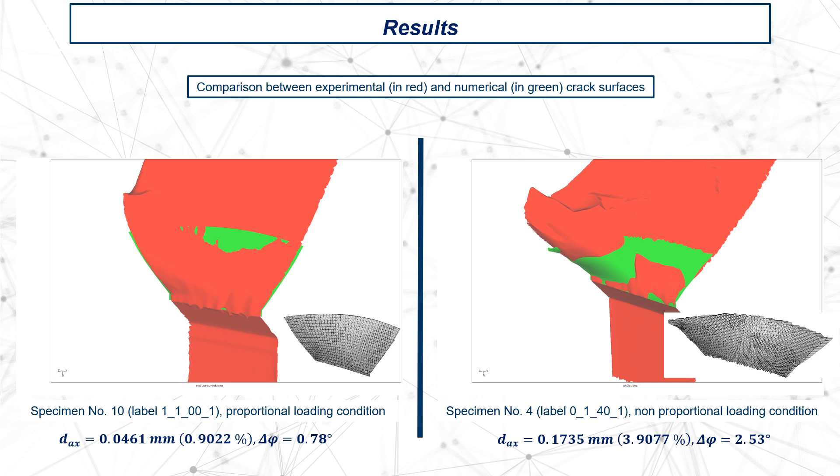In this slide, on the left-hand side, there is a comparison between experimental in red and numerical in green crack surfaces for a proportional loading condition, both R_axial and R_torsional equal minus 1, and zero phase shift between the loads. It is worth to note how the discrepancy, both in terms of axial deviation and deflection angle, is higher in the case of non-proportional load.